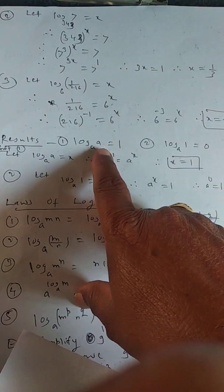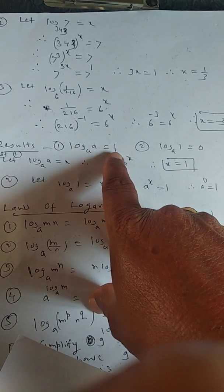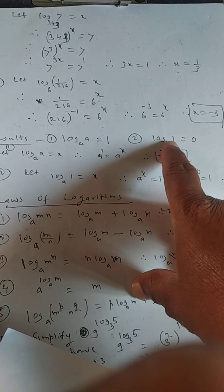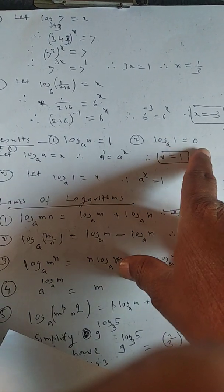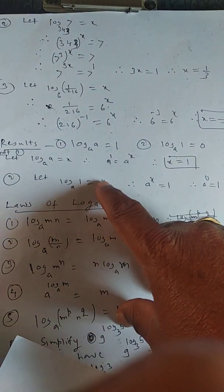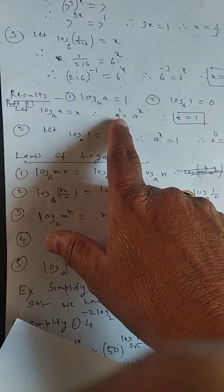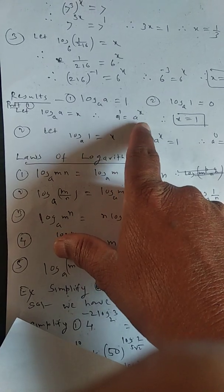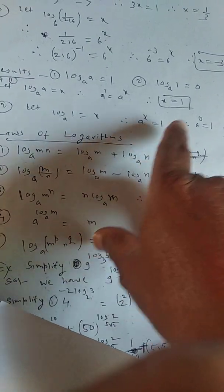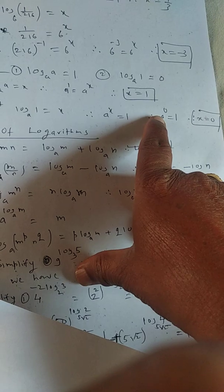Some key results: log_a(a) is always 1 — for example, log_5(5) = 1, log_6(6) = 1, log_8(8) = 1. And log of 1 to any base is always 0 — log_a(1) = 0, log_5(1) = 0, log_6(1) = 0. Proofs: let log_a(a) = x; its index form is a raised to 1 = a raised to x, so x = 1. For log_a(1) = x, a raised to x = 1; putting x = 0 gives a raised to 0 = 1, therefore x = 0.